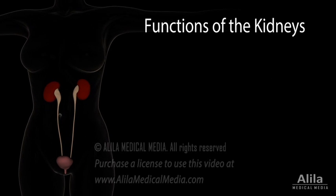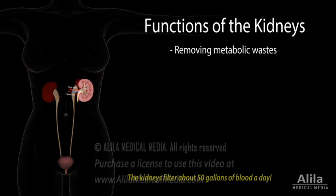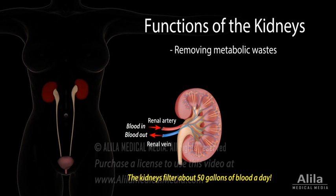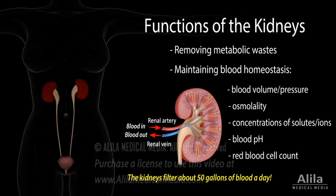The urinary system is best known for removing metabolic wastes from the body in the form of urine, but its importance goes far beyond that function. As the kidneys filter large amounts of blood plasma, they are well-positioned to detect changes in blood volume and composition, and respond accordingly. In fact, the kidneys are critical in maintaining steady state, or homeostasis, of many blood parameters, including blood volume and pressure, osmolality, concentrations of various solutes, blood pH, and red blood cell count.